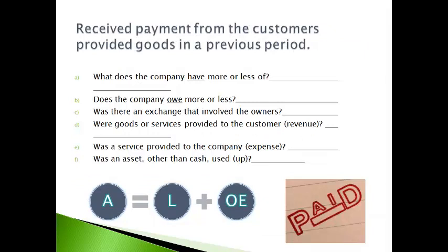The company received payment from customers who were provided goods in a previous period. The company now has more cash and less accounts receivable because the customer no longer owes the company. The company does not owe. Customers and owners were not involved. The goods were provided in the prior period, not the current period. A service was not provided, and an asset was not used up. The balance sheet will report more cash and less accounts receivable. Nothing is reported on the income statement for this period.